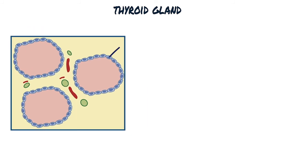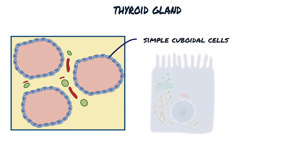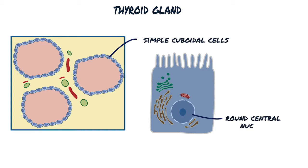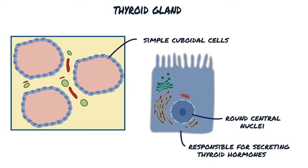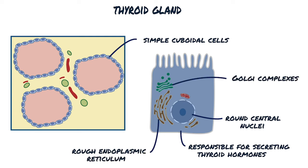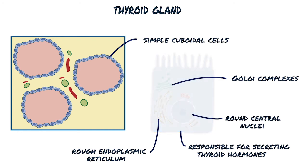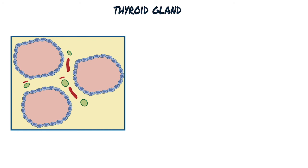The follicular epithelium is made of a single layer of simple cuboidal cells with round central nuclei and dark chromatin. These cells are responsible for secreting thyroid hormones when needed. They are rich in rough endoplasmic reticulum, and apically there are Golgi complexes, secretory granules, numerous phagosomes and lysosomes, and microvilli.